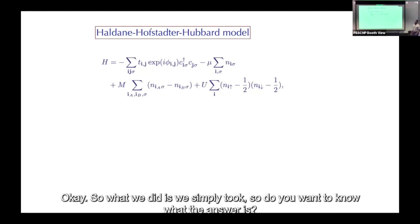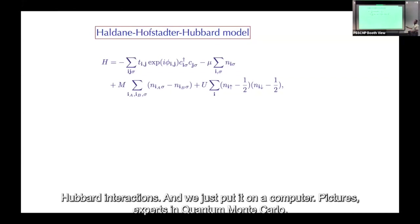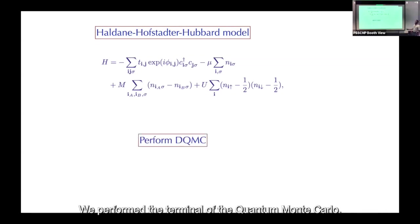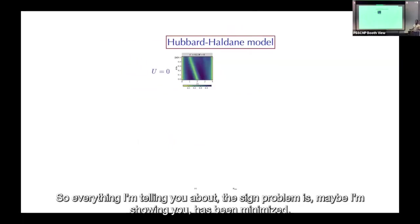We simply took the Haldane model with Hubbard interactions and put it on a computer. Peng is an expert in quantum Monte Carlo and performed determinantal QMC. As for sign problems — we went as low in temperature as we could go and then stopped. Everything I'm showing has been checked against that issue.